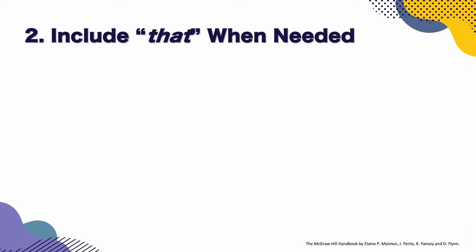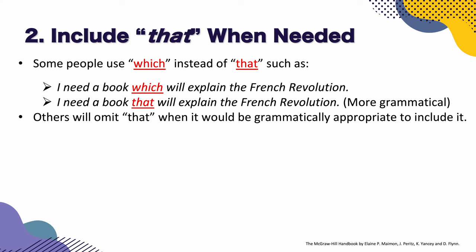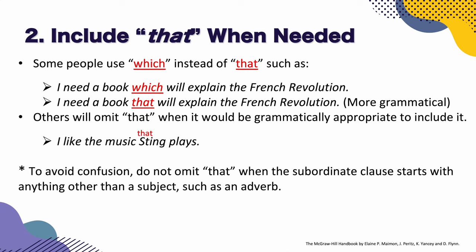Now let's take a look at the second point: include 'that' when needed. Some people use 'which' instead of 'that,' such as: 'I need a book which will explain the French Revolution.' It's more grammatical to say: 'I need a book that will explain the French Revolution.' Others omit 'that' when it would be grammatically appropriate to include it. Some people write: 'I like the music Sting plays.' It's better to add 'that': 'I like the music that Sting plays.'